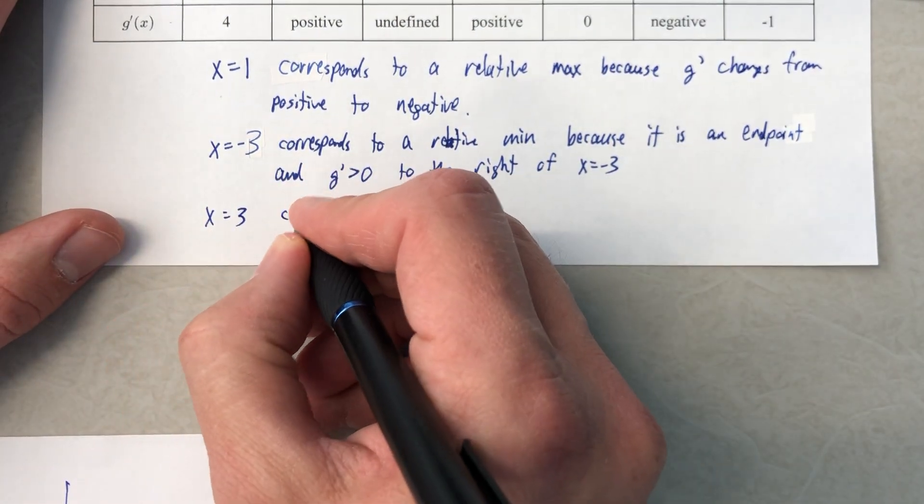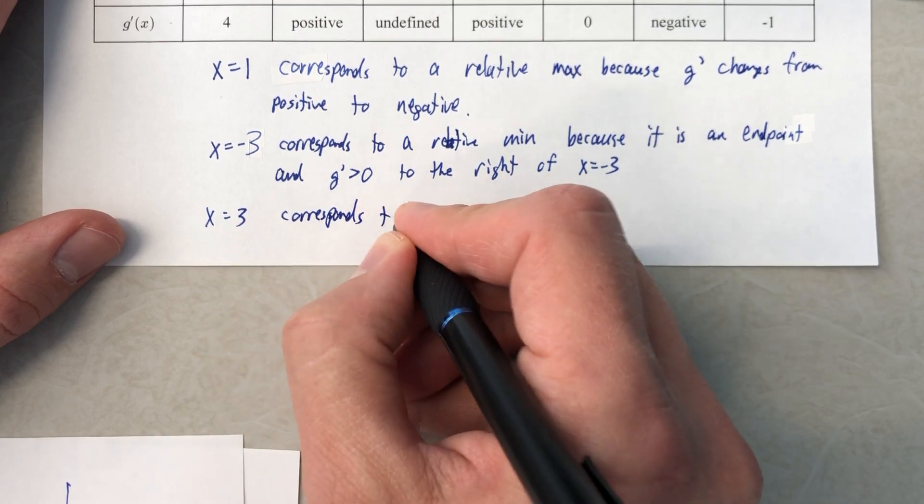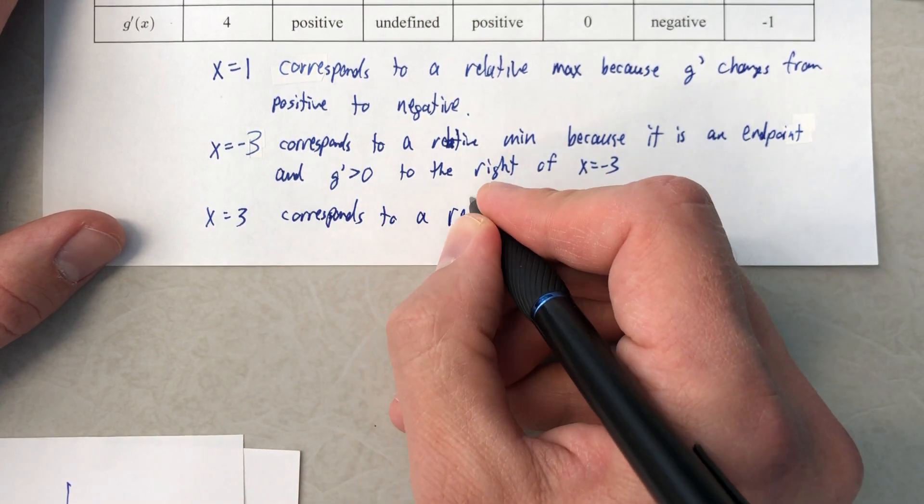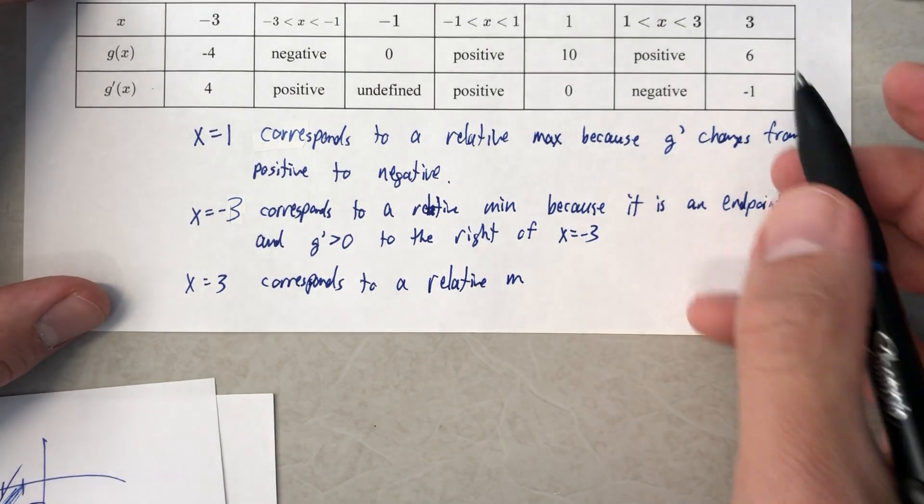Let's figure out what happens here. x equals 3 corresponds to a relative min or max? Let's see.